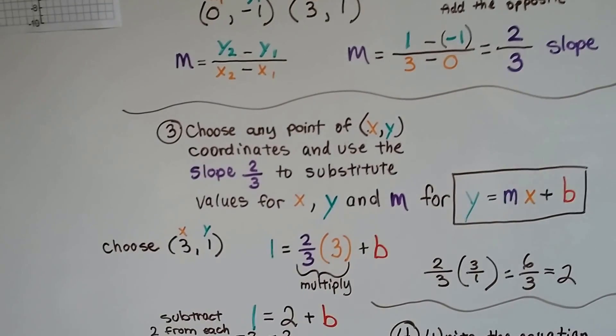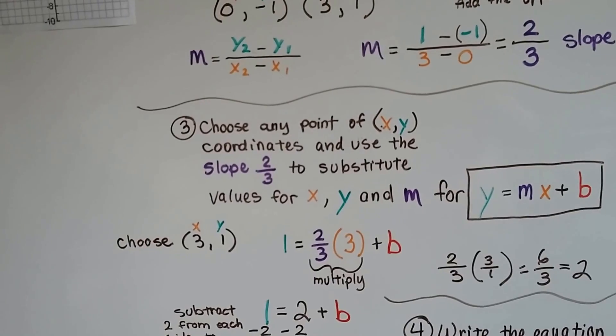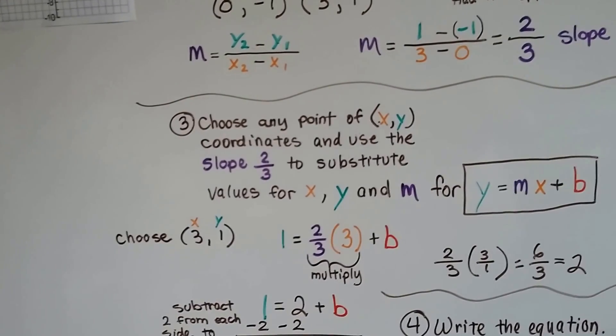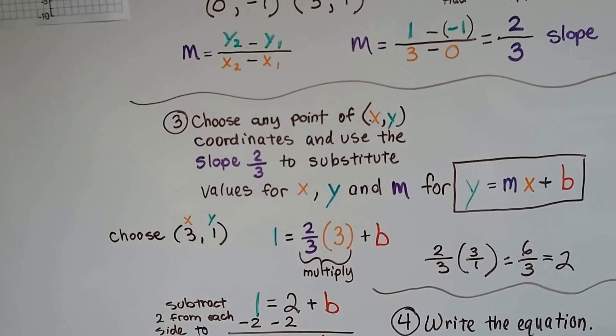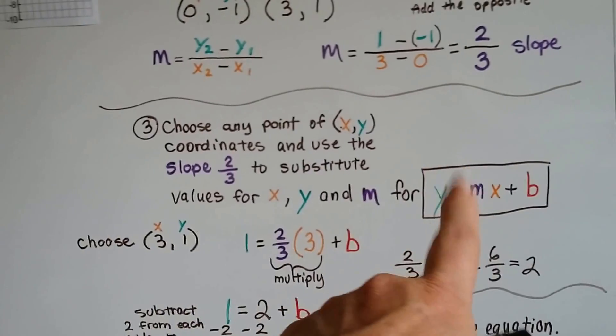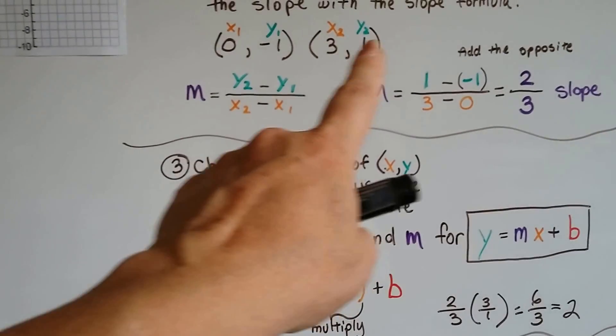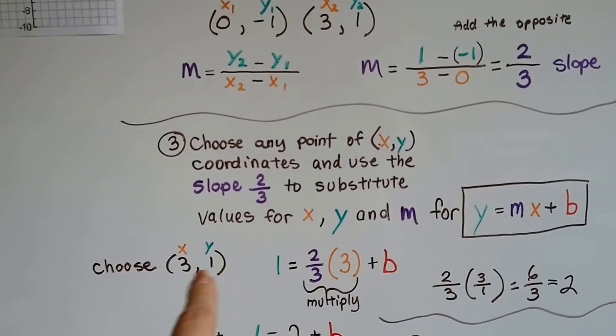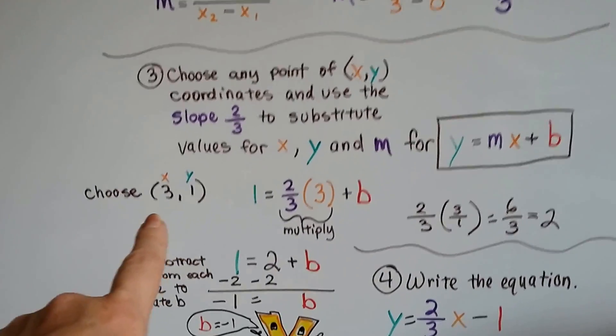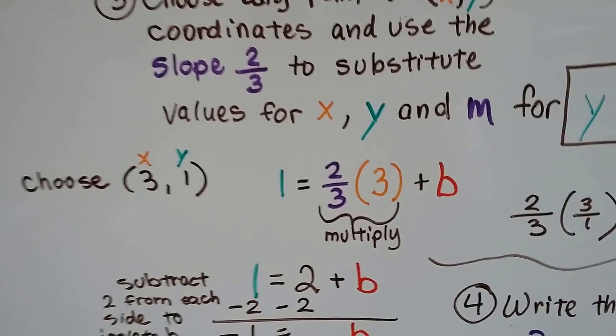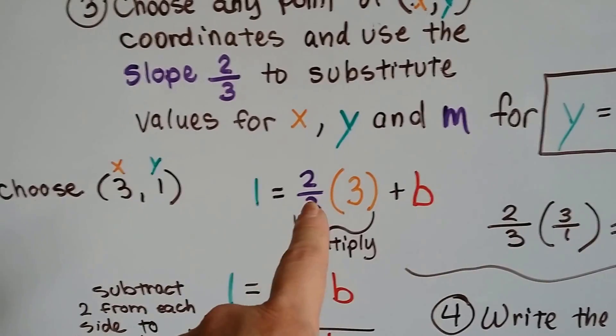Now we can choose any point of xy coordinates to use the slope 2 thirds to substitute the values for x and y. And m we plug in to this slope intercept form. So I chose our points (3, 1). I figure 1 and 3 are going to be easy to multiply 2 thirds by.